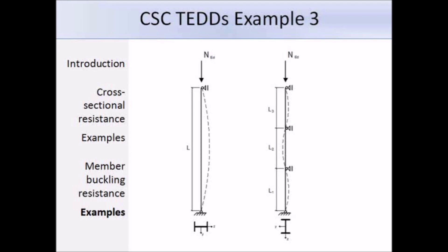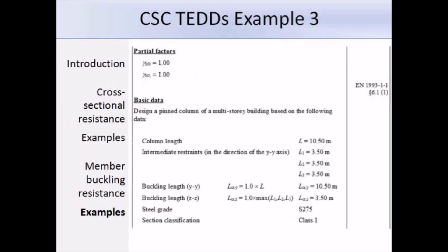At the top we have the partial factors γM0 and γM1, both equal to 1, consistent with both the core Eurocode document and the UK National Annex. The effective length factor is 1 since both ends are pinned, giving buckling lengths along both the major and minor axes.